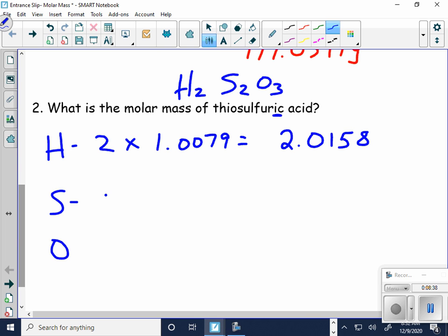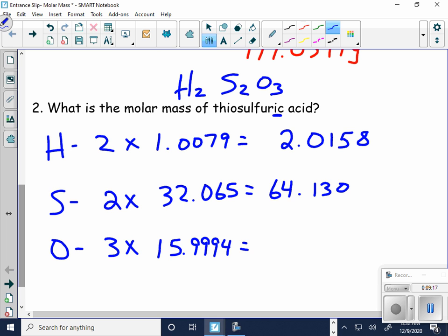Sulfur. I have two sulfurs. Each sulfur is 32.065. So that gives me 64.130. Oxygens, I have three of them. 15.9994. So that's 47.9982.